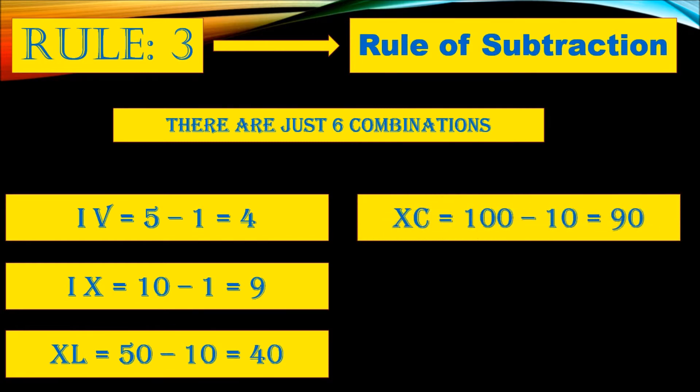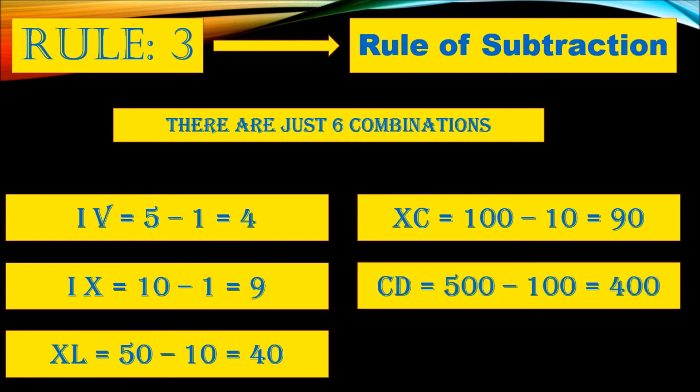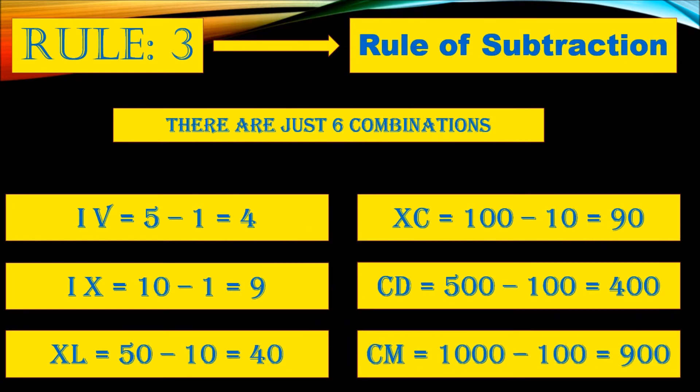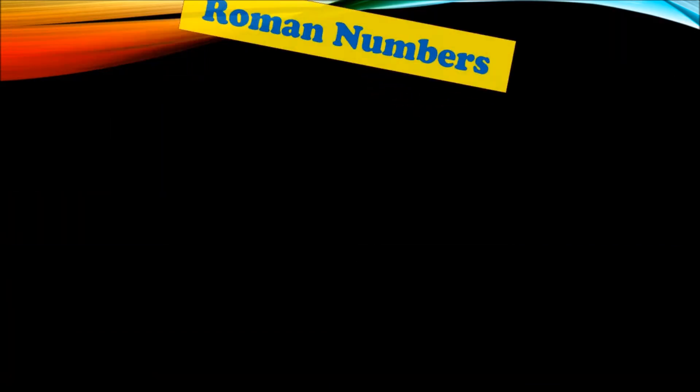XC, that is one hundred minus ten equals ninety. CD, that is five hundred minus one hundred equals four hundred. And CM, that is one thousand minus one hundred equals nine hundred. These are the just six combinations of subtraction.